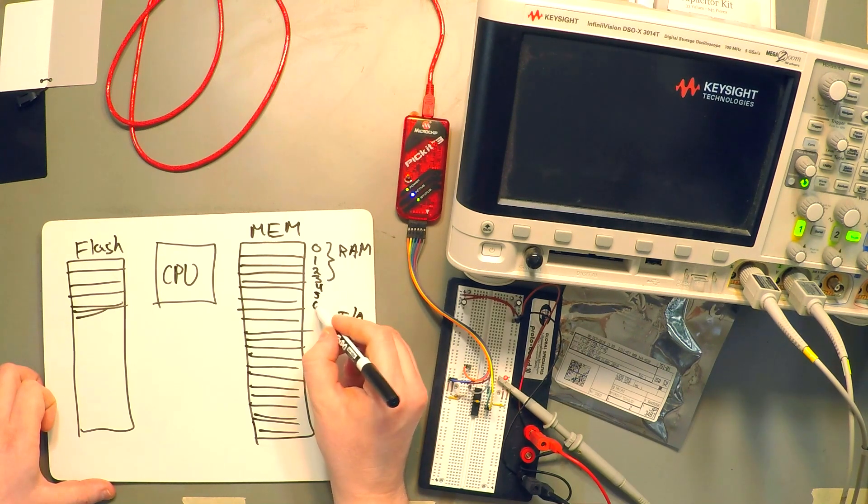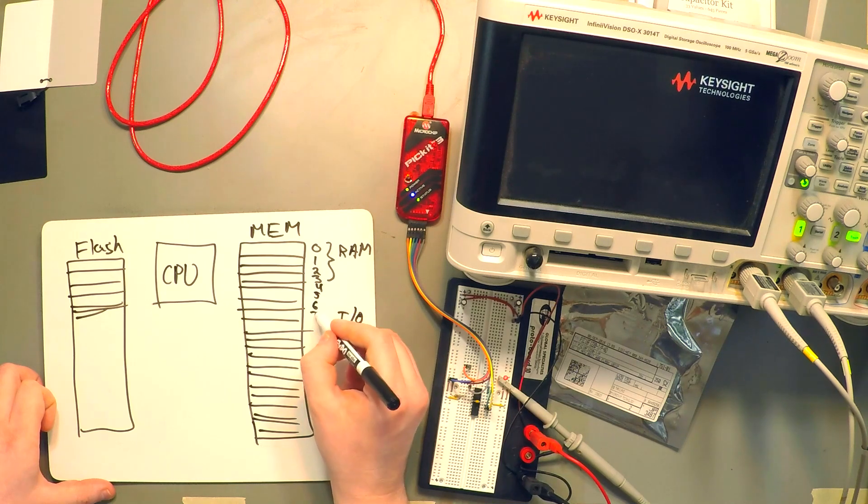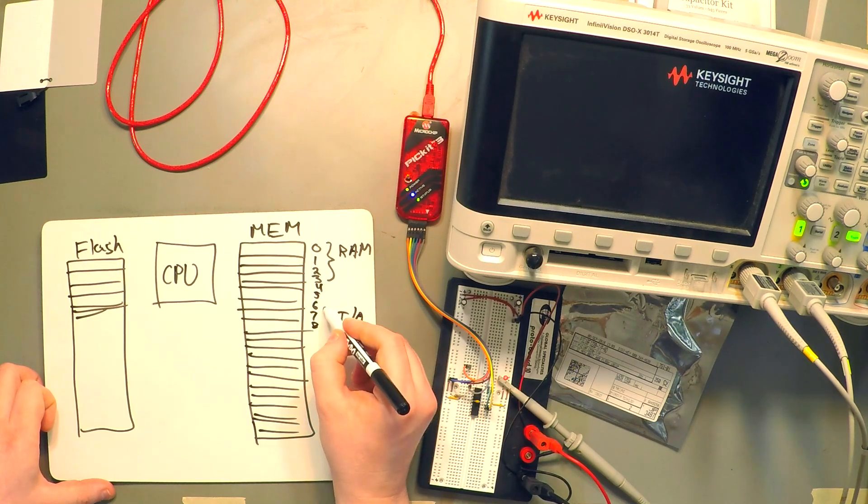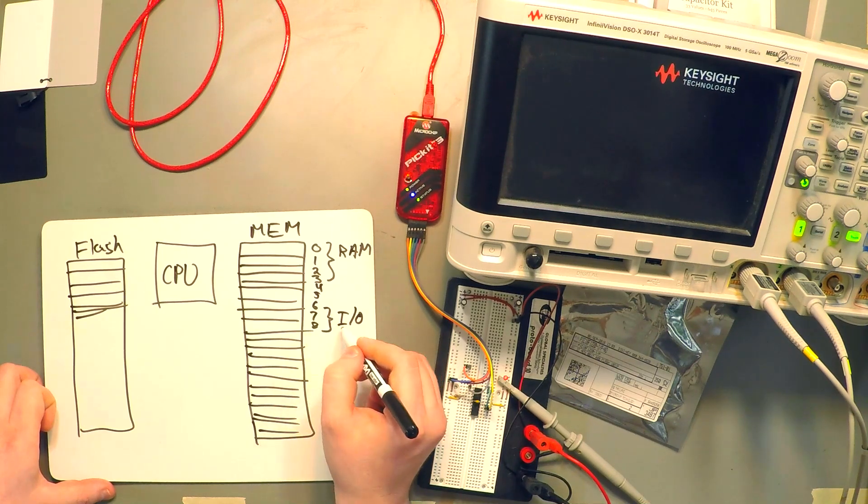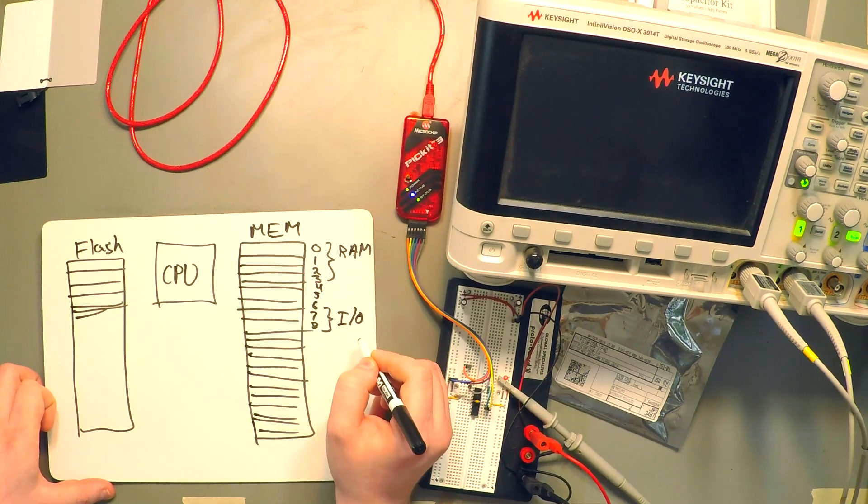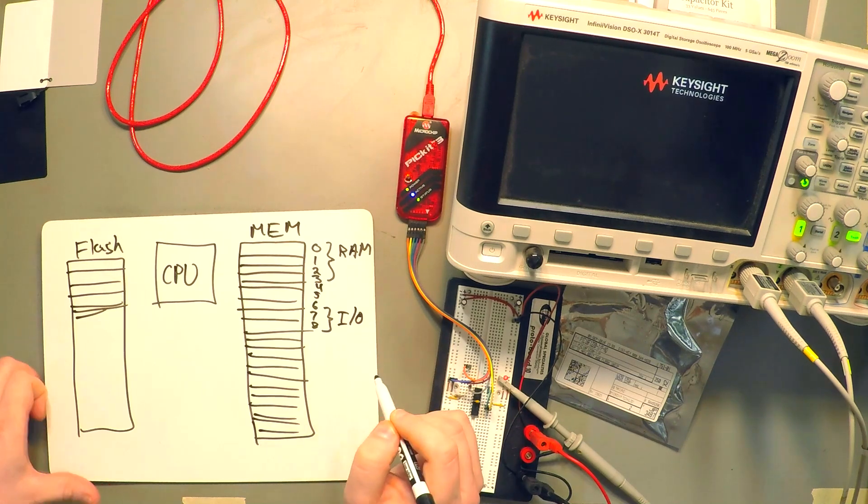And then another peripheral like the input and output peripheral would get its own address range. So for example, if we keep going with the numbering here, 5, 6, 7, 8. Let's say these two addresses, 7 and 8, actually represent the input and output peripheral.